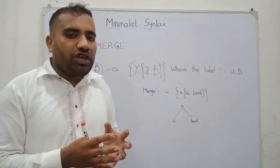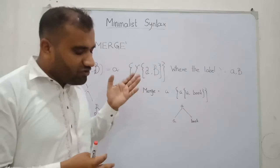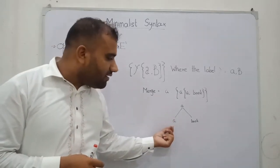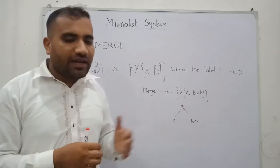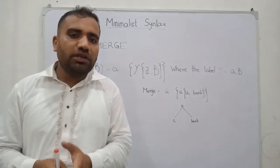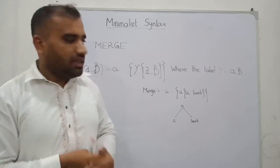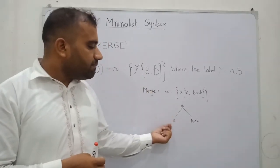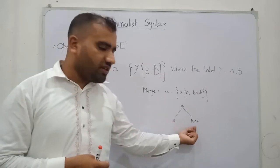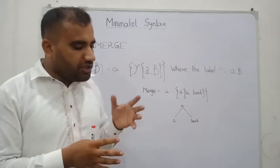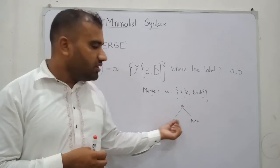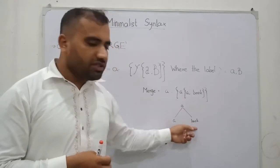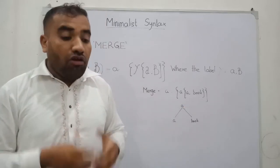Now we are applying these merge operations on linguistic items. If we apply merge on alpha and beta, where alpha is R and beta is 'book,' then in phrase structure grammar the label of these merging categories will become R. Why do we say R?